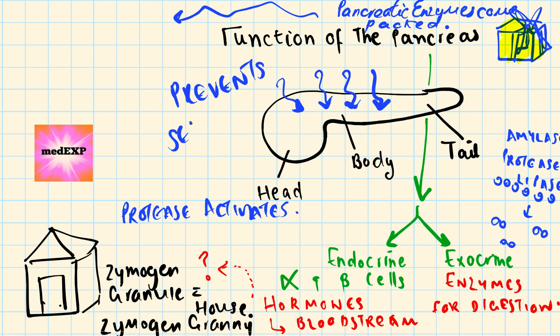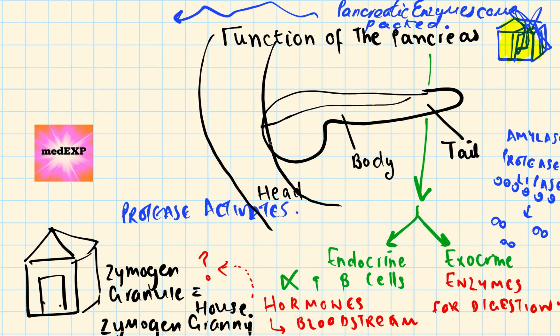So the fact that these enzymes are stored in a gift form, they're packed, we need these proteases, we need these enzymes to actually activate these enzymes. So it prevents self-digestion, autodigestion as is known of the pancreas, which occurs in acute pancreatitis.